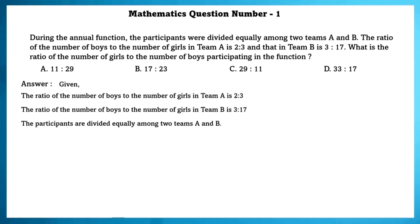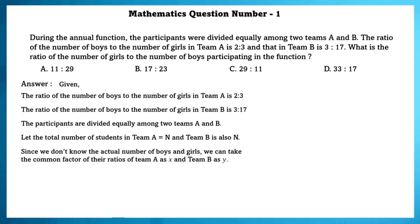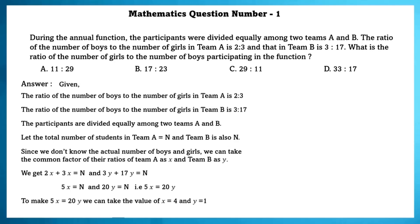Given the participants were divided equally among two teams A and B, let the total number of students in team A equal N and team B is also N. Since we don't know the actual number of boys and girls, we can take the common factor of their ratios of team A as X and team B as Y. We get 2X + 3X = N and 3Y + 17Y = N, simplifying to 5X = N and 20Y = N, that is 5X = 20Y. To satisfy this, we take X = 4 and Y = 1.